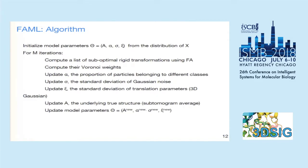Here is the algorithm of our method. First, we initialize the model parameters A, alpha, sigma, and xi from the distribution of the tomograms. For M iterations, we compute a list — in our example, 36 suboptimal rigid transformations — using fast alignment, and compute the error for normalization weights using Monte Carlo sampling. We update alpha, the proportion of particles belonging to different classes. We update sigma, the standard deviation of the Gaussian noise. We update xi, the standard deviation of the translation parameters, which in the model follows a 3D Gaussian distribution. Finally, we update A, the underlying true structure, which is also the subtomogram average.